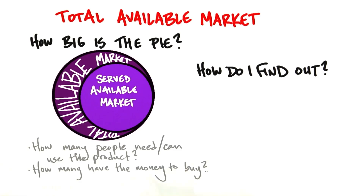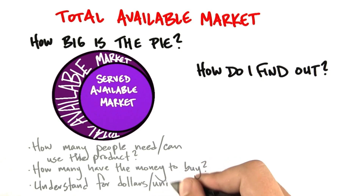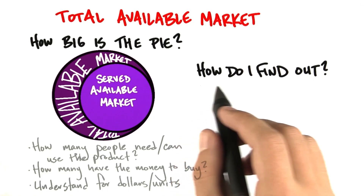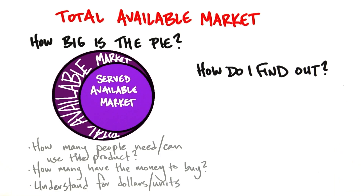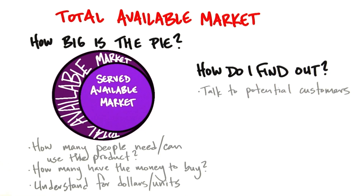You want to do some thought experiments: how large would the market be in dollars if they all bought? If everyone in the served available market bought, how large would this be? This is your first test — either 'oh' or 'wow.' You want to understand this both for dollars and units. This is where you're really out of the building and talking to customers. Using the pie analogy, you narrow from the number of people in the world down to the number of capable Android phones.